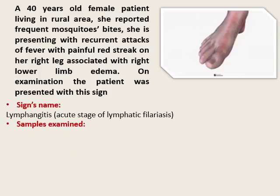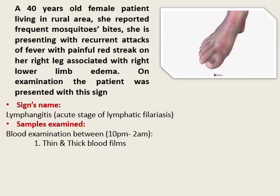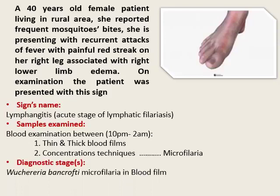To examine this patient, we take a blood film examination from 10 PM to 2 AM — ideally at midnight. We can do thin and thick blood films and find microfilaria. If none is found, we can use concentration techniques such as the Knott technique. The diagnostic stage is Wuchereria bancrofti microfilaria in blood film.